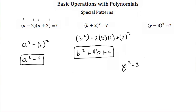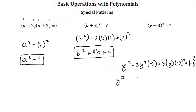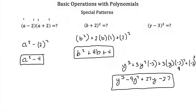Here we have y minus 3 cubed. Breaking it down: y cubed, plus 3 times y squared times negative 3, plus 3 times y times negative 3 squared, plus negative 3 cubed. Simplifying: y cubed, minus 9y squared, then 3 times y times 9 is positive 27y, and negative 3 cubed is negative 27. So the answer is y cubed minus 9y squared plus 27y minus 27. That completes our tutorial on basic operations with polynomials.